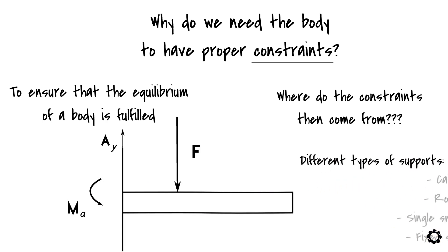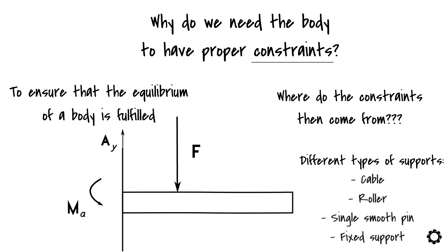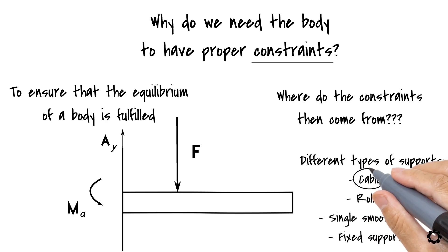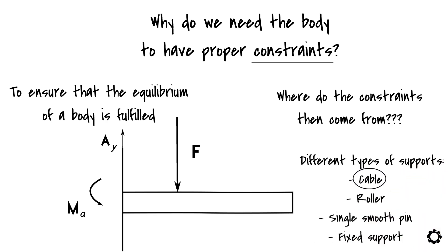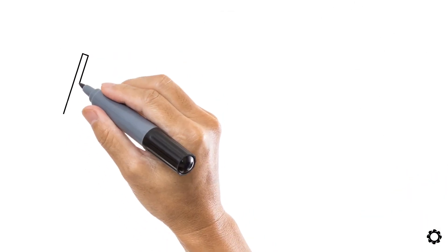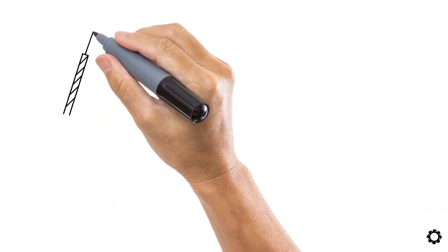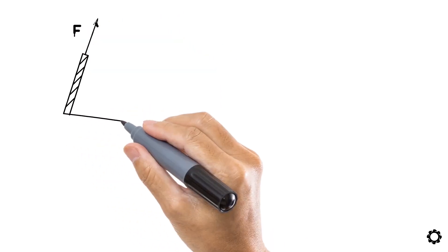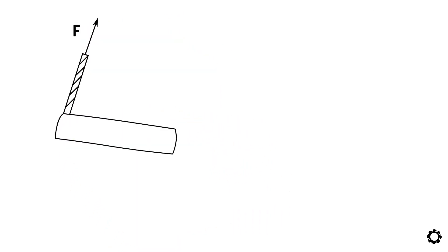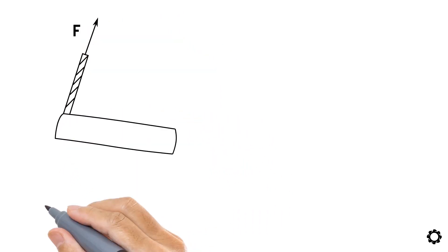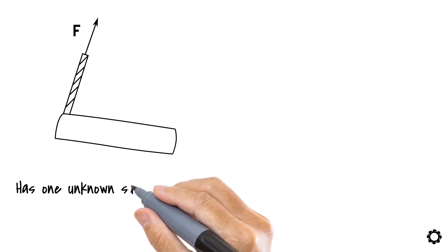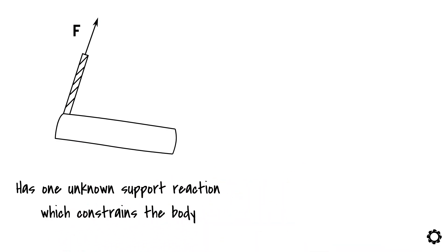Let's go through the most typical ones we will encounter in this course. A cable creates a reaction force acting away from the member in the direction of the cable. Therefore, the cable has one unknown support reaction which constrains the body.